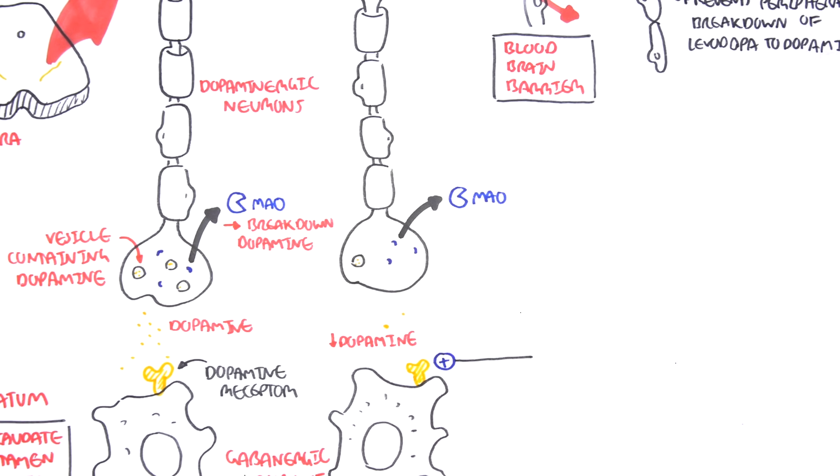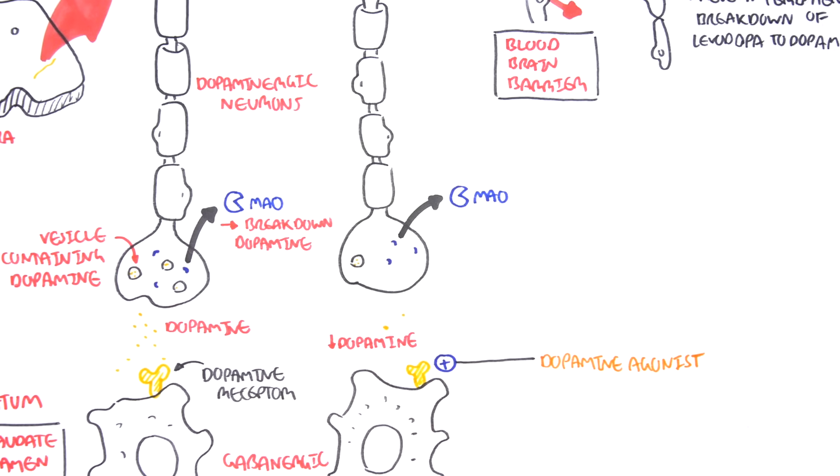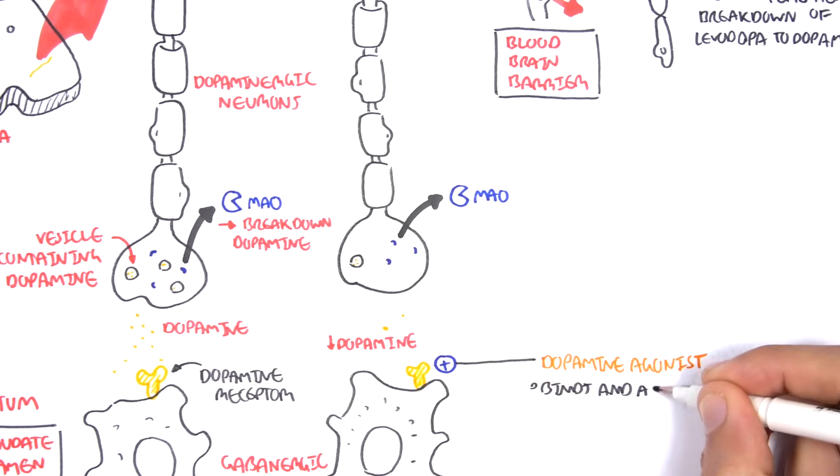For example, you can have dopamine agonists, and these essentially bind and activate dopamine receptors, so they mimic the effects of dopamine.